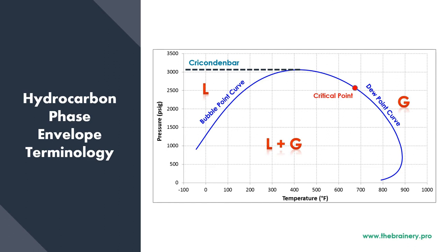So if we exceed the pressure of the Cricondenbar, there is no way we could have liquid in the system. Similarly, the Cricondentherm is the highest temperature at which we could have liquid in the system — meaning if we go past the Cricondentherm towards the right, we could only see gas.